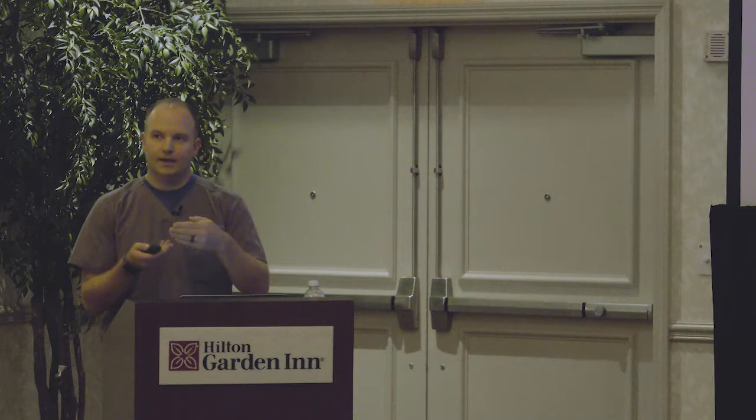Gram negative bacteria have an outer membrane that protects the cell wall, so the safranin dye turns that outer membrane red. Gram positives appear blue-purple, gram negatives appear red, and atypicals are actually colorless because they don't have any peptidoglycan in their cell wall.